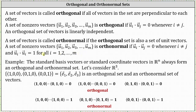Whenever we dot a unit vector with itself, the result is always one. As an example, the standard basis vectors, or standard coordinate vectors, in Rⁿ always form an orthogonal and orthonormal set.